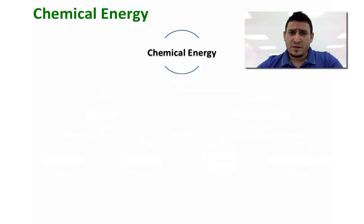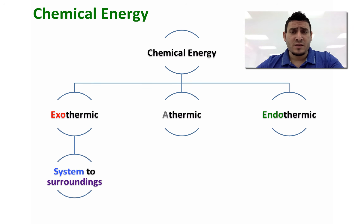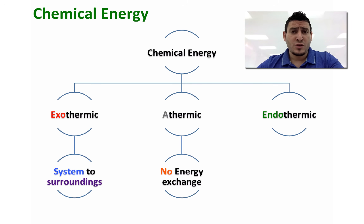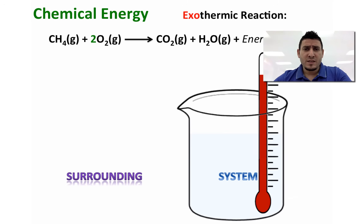We will define the chemical energy, which could be of three types: exothermic, athermic, or endothermic. Exothermic means that there is a transfer of energy from the system to the surroundings, so the system is losing energy to the surroundings. Athermic means that there is no energy exchange between the system and the surroundings. And finally, endothermic means that the system is gaining energy from the surroundings, and therefore the surroundings is losing energy to the system.